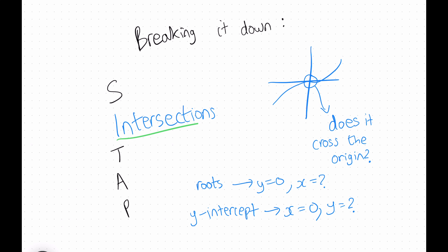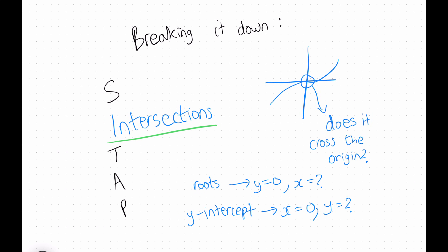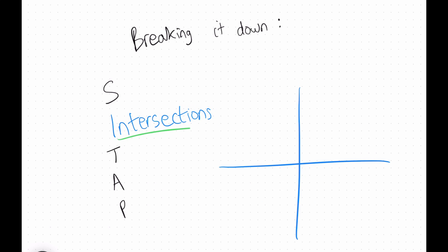Next up we have I for intersections, which is probably the most obvious one. This is where you ask yourself: does the function cross the origin? You find the roots — the values of x when y is 0 — and the y-intercepts, the values of y when x is 0. You literally just mark out the points that you know the function goes through, and the rest of the steps help you work out what the function actually looks like.